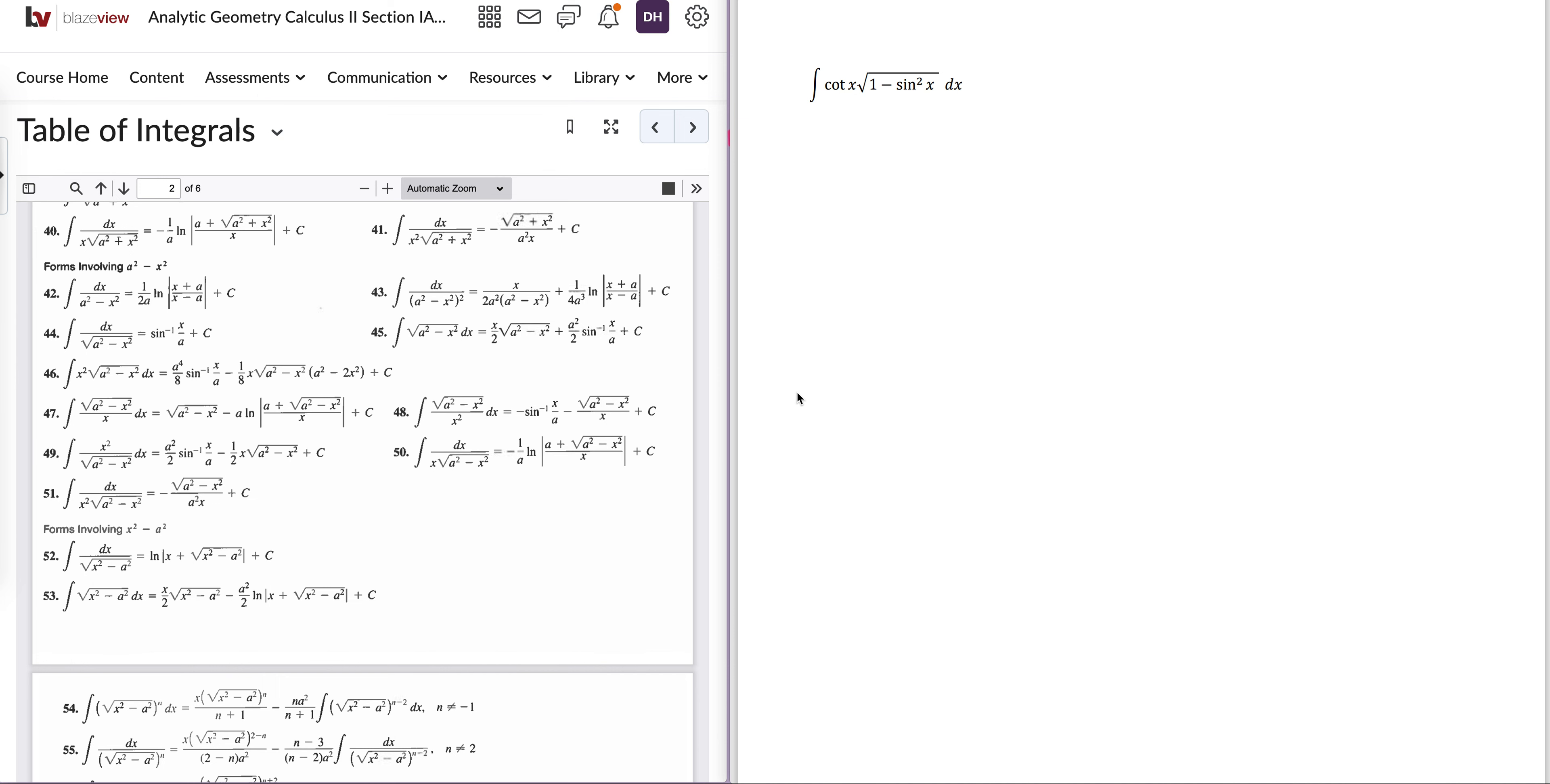For this last example, we're asked to integrate cotangent x times the square root of 1 minus sine squared x dx. There's a couple different ways you can approach this. They do all come to the same answer in the end. I'm going to use some trig identities. I find that that's probably the easiest way to work this type of problem.